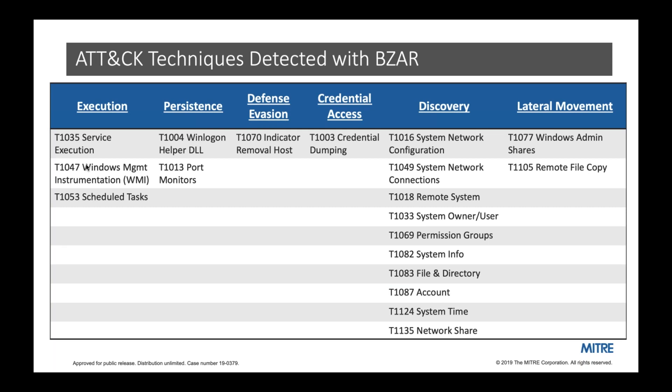This slide shows a summary of the different attack techniques detected with BZAR. Across the top are the ATT&CK tactic categories, and down the columns are the different attack techniques by technique ID and name. There are 19 techniques listed among the categories of execution, persistence, defense evasion, credential access, discovery, and lateral movement. Almost all of them are RPC-based — BZAR detects specific RPC interfaces and methods attributed to certain attack techniques. All are RPC-based except the lateral movement category, where BZAR uses specific identifiers in the SMB traffic.